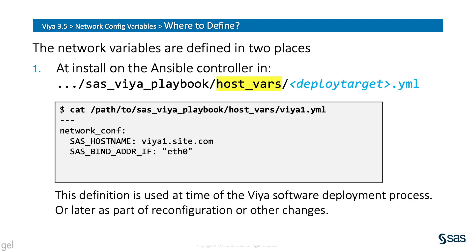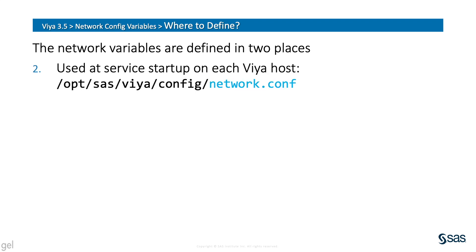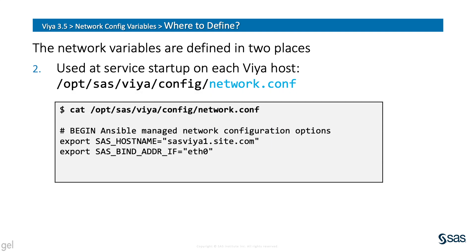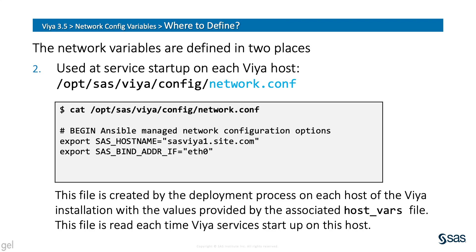Take care to include the three dashes at the top of the file and to ensure white spacing is preserved. These host_vars files are processed when Ansible runs the site.yaml playbook to deploy the Viya software or to reconfigure it later. The SAS Viya deployment process creates another file with the network configurations on the targeted Viya hosts, referred to as network.conf. The intent is the same as the host_vars YAML file — to create environment variables for network configuration — but this time in shell syntax. This is the live file; it is processed each time Viya services start up on the host.